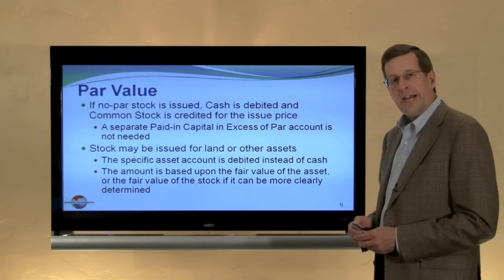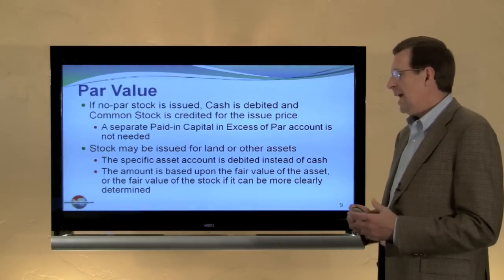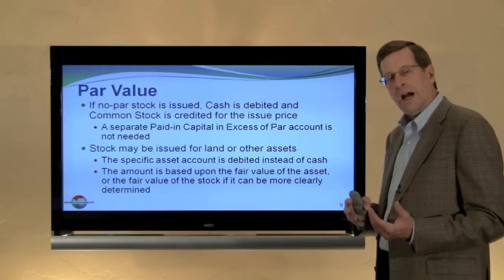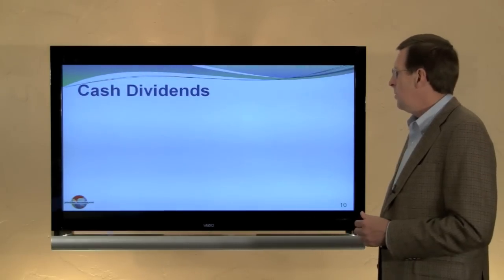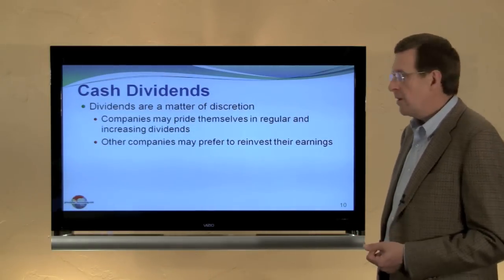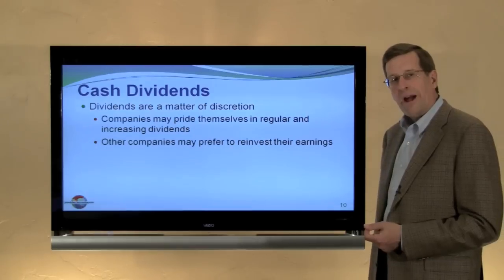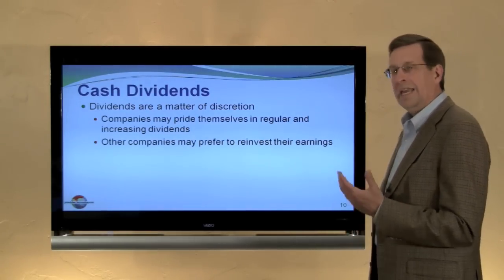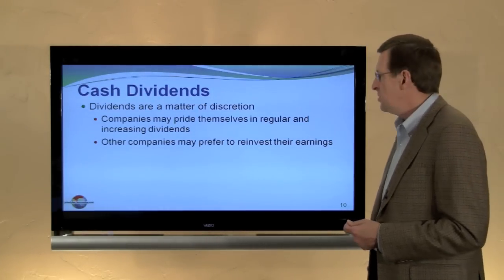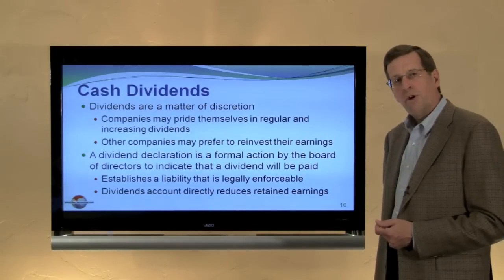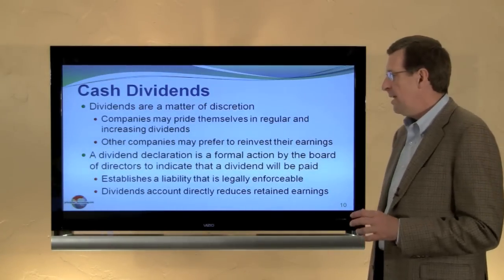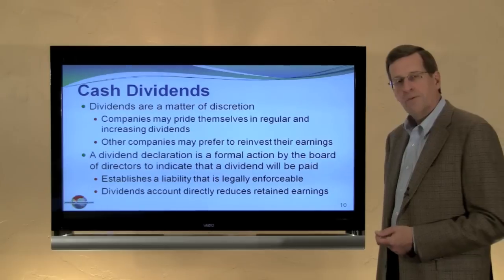Stock can be issued for other than cash — for land or other assets. The specific asset account would be debited instead of cash, and common stock would be credited for the fair value of the asset or the fair value of the stock, whichever is more clearly determinable. Regarding cash dividends: dividends are a matter of board discretion, at least insofar as common stock is concerned. Many companies pride themselves on a long history of regular dividends and even increasing dividends on a regular basis, while other companies prefer to reinvest accumulated earnings in new ventures. A dividend declaration is a formal action by the board of directors to indicate that a dividend will be paid, and it establishes a legal liability of the company.